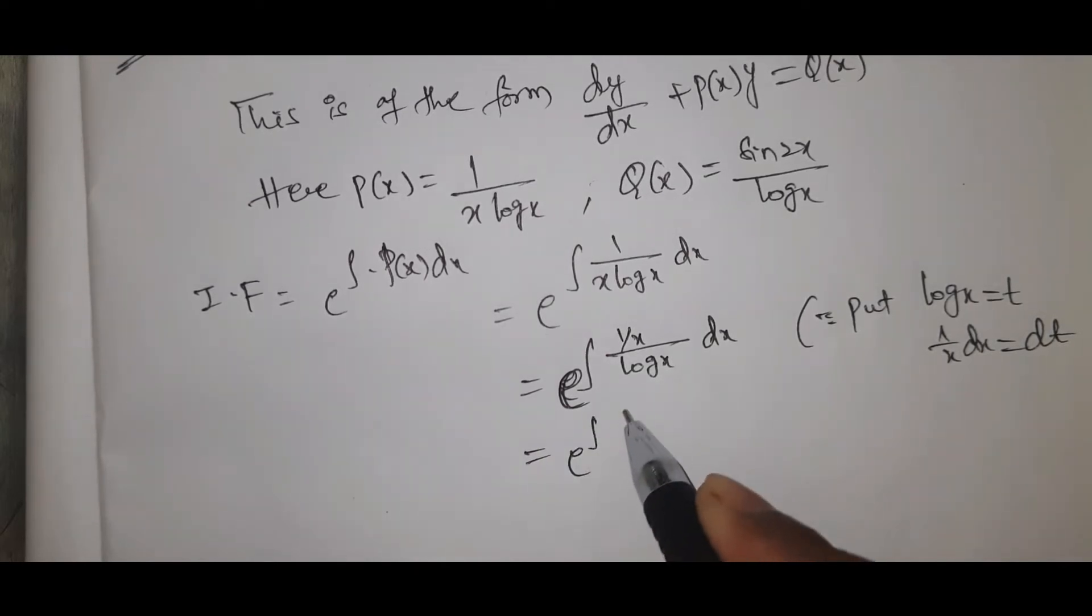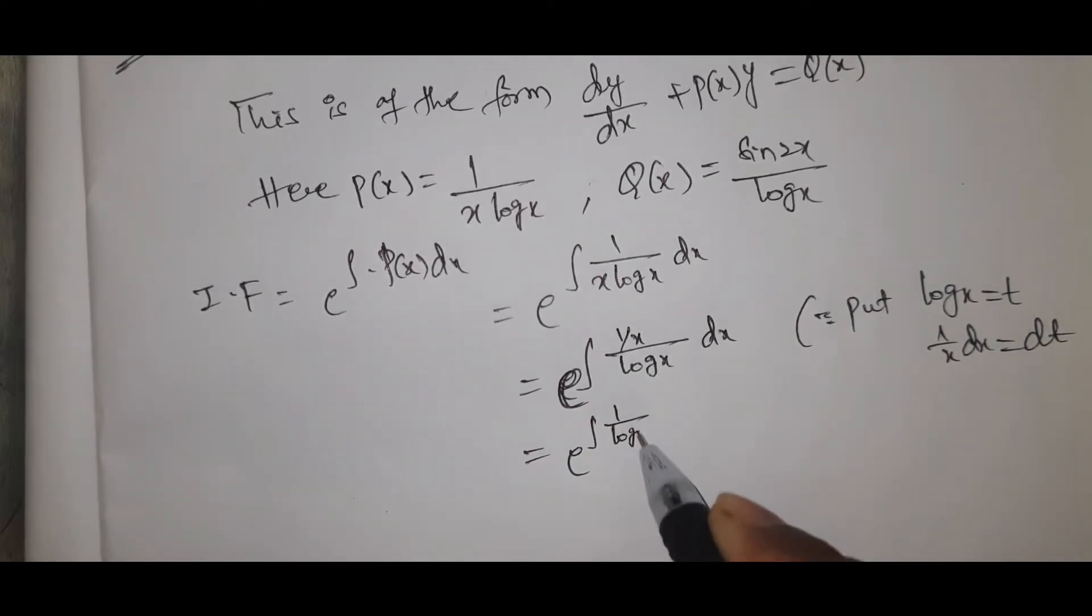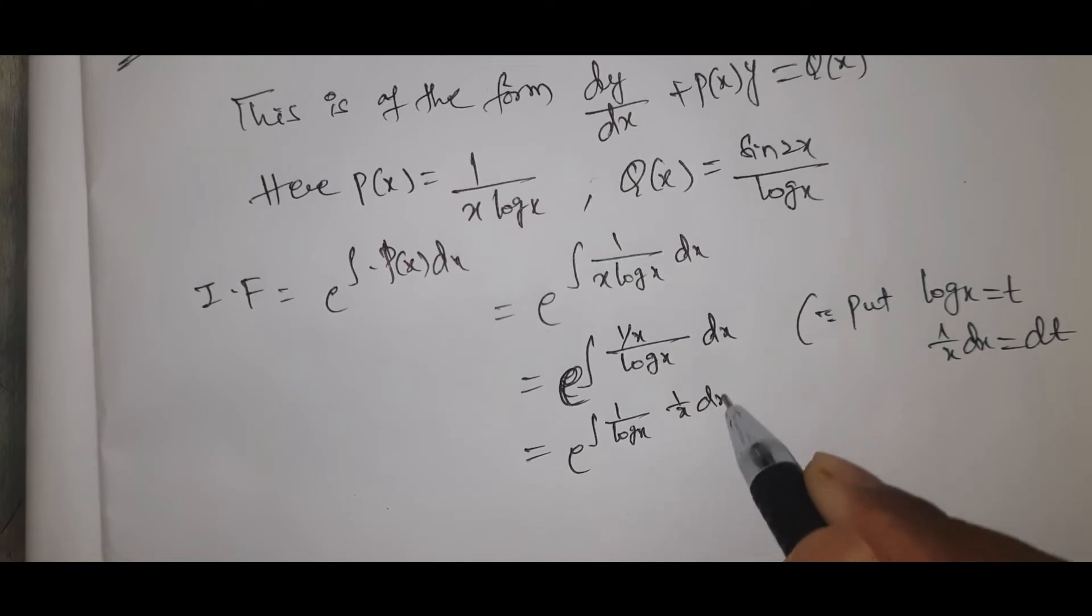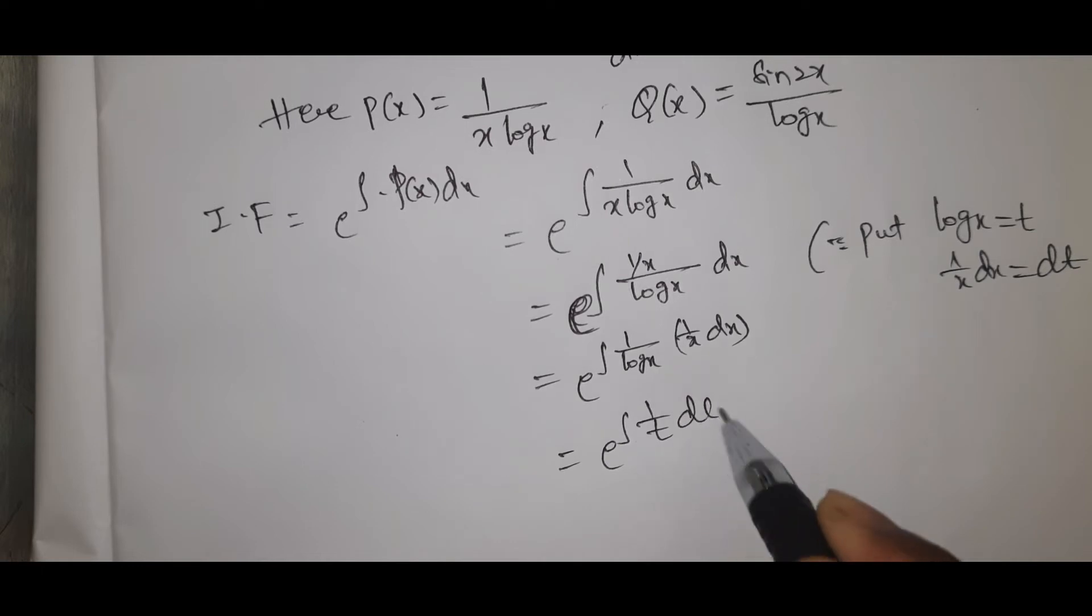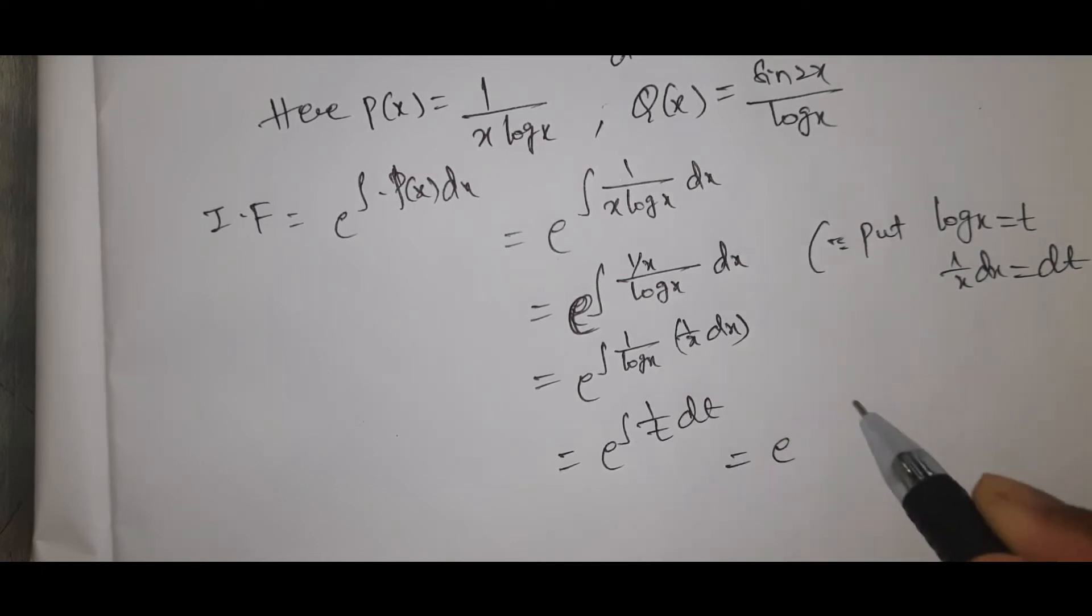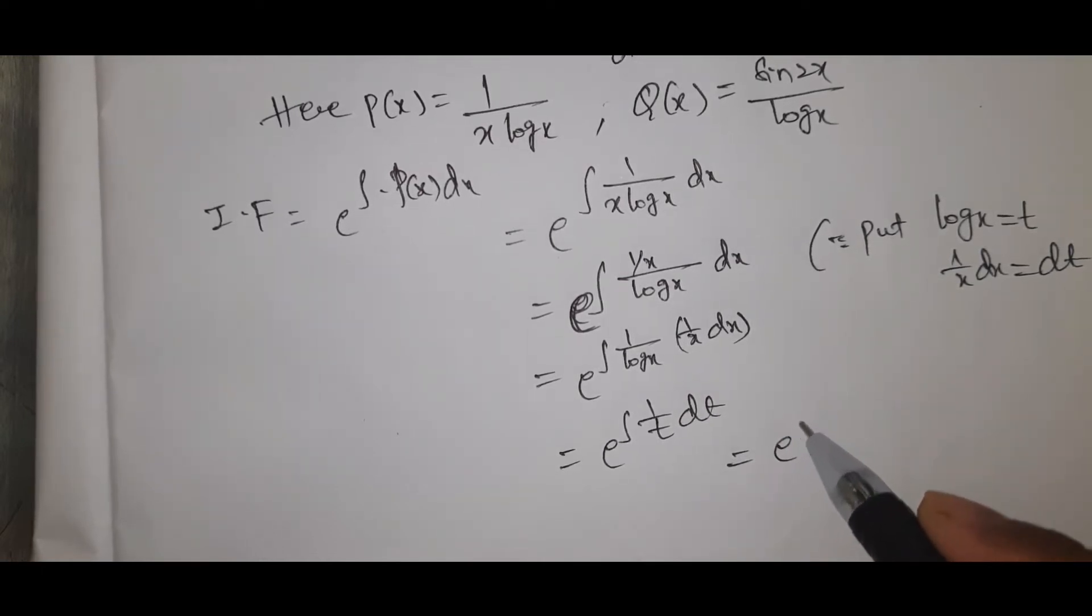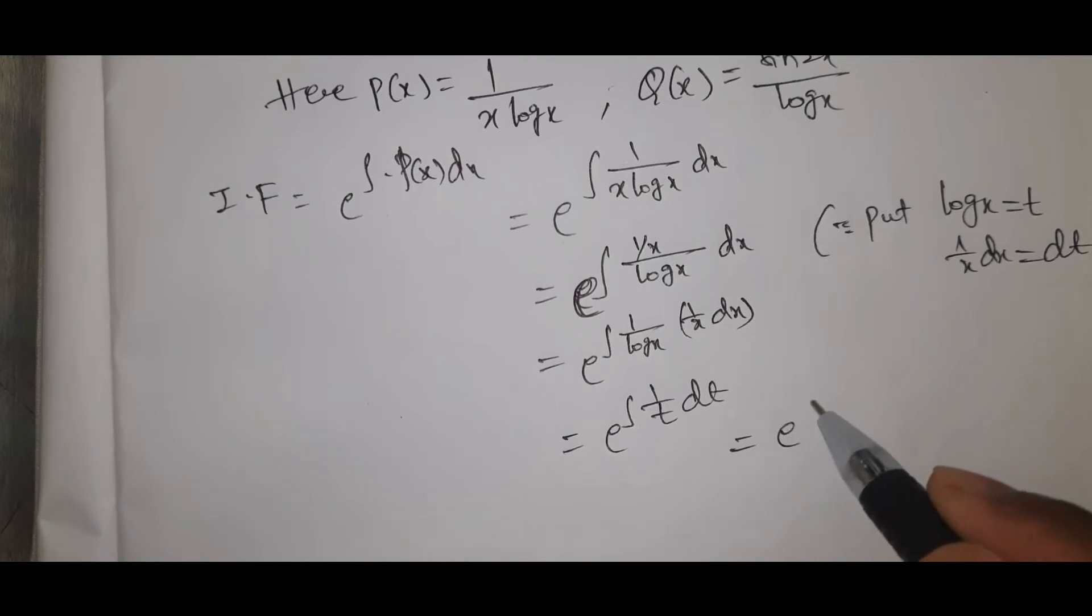E power integral 1 by t dt. Now e power integral 1 by x dx, what is that? Log x. Integral 1 by t dt is log t. Log t, that equals e power log.